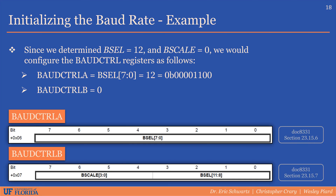Now that we've determined the baud select value, we can initialize the baud control registers, baud control A and B. Since baud select will be 12 and b-scale is 0, we'll load the lower 8 bits of the baud select value — in this case the entire value of 12 — into the baud control A register. If the baud select value is greater than 255, we would store the upper 4 bits into the lower nibble of the baud control B register. The entire 4-bit b-scale value must be written to the upper nibble of the baud control B register in 2's complement format.